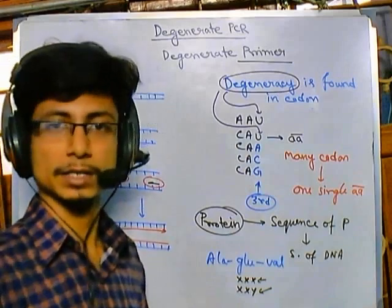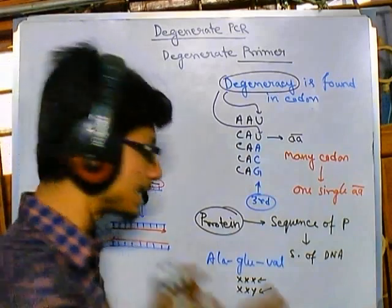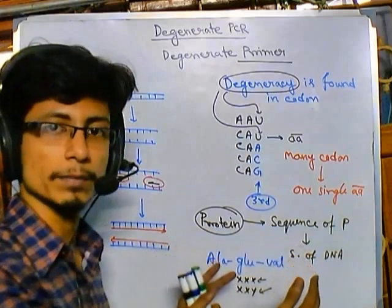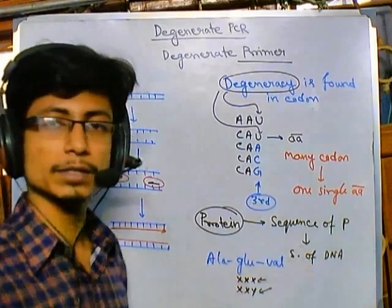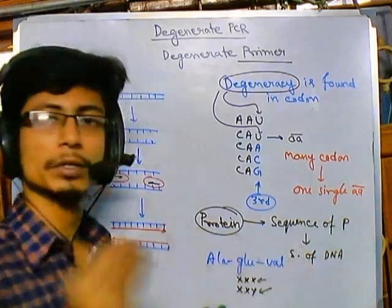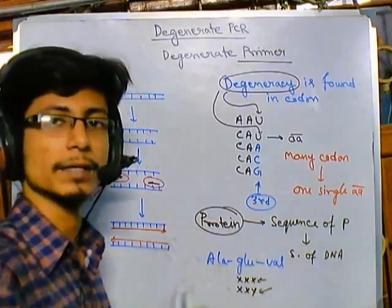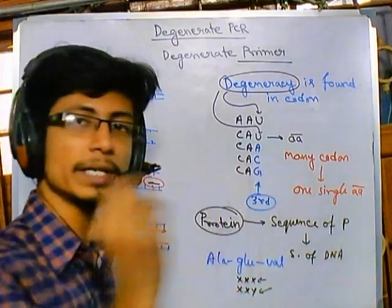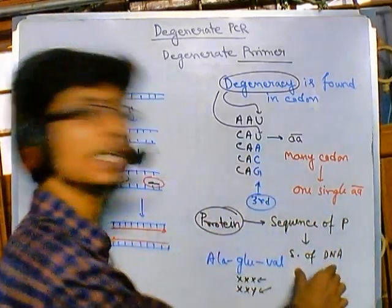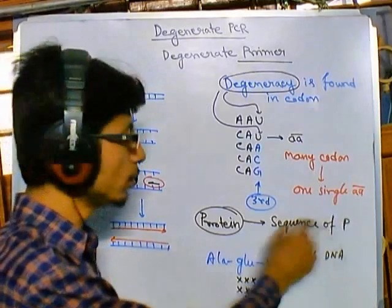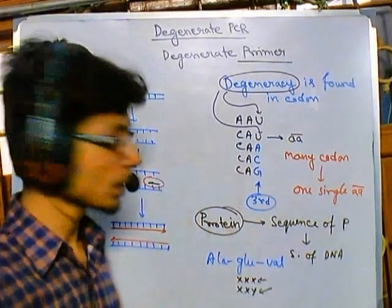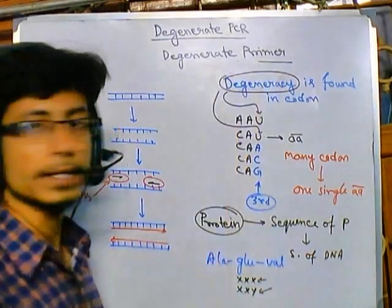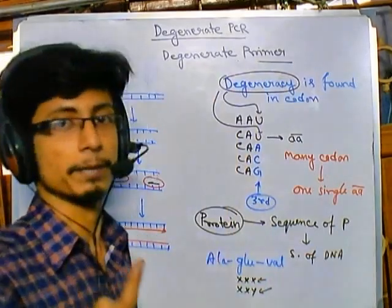It is also possible that valine is coded by four different codons. This makes it very difficult to predict the exact DNA sequence from a protein sequence. Bioinformatics software can give us a confidence level, but it is still difficult. That is why, for carrying out PCR on DNA whose protein sequence is known, we need to use degenerate primers.